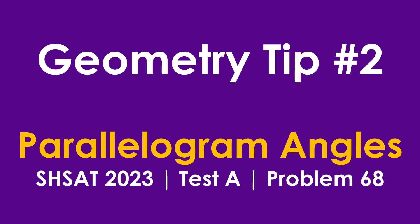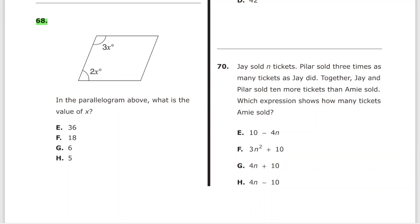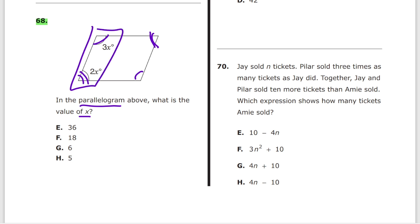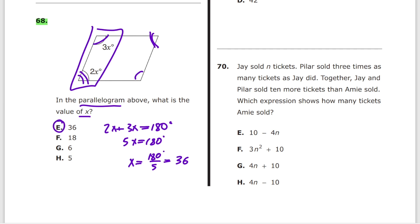Geometry tip number two is angles inside a parallelogram. We are covering problem number 68 from test A of SHSAT 2023. In the parallelogram, what is the value of x? Opposite angles are equal; adjacent angles sum to 180 degrees. So 2x plus 3x equals 180 degrees, giving 5x = 180, therefore x = 36 and the answer is E. Remember: opposite angles are equal, adjacent angles add up to 180 degrees.